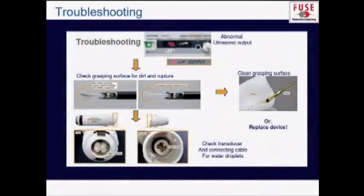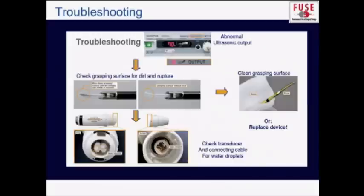What do you do if you plug in your device and you're having problems because it's giving you an error code? This gets a little bit into the specifics of each different brand, but things to look for: check the grasping surface to make sure there's no problem with the plastic side or that there's no grime or dirt built up inside the device. Carefully look at the electrical contacts on the device and make sure the grasping surface is clean. If the grasping surface gets too dirtied up by coagulated protein sticking to the jaws, it can interfere with the excursion back and forth, and that can cause an error code.